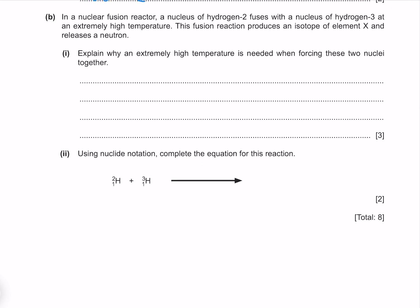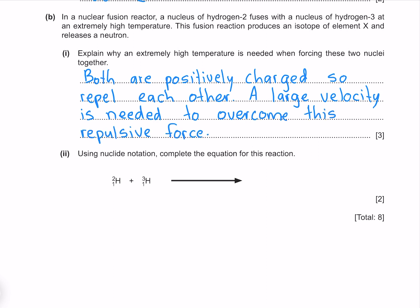In a nuclear fusion reactor a nucleus of hydrogen-2 fuses with a nucleus of hydrogen-3 at an extremely high temperature. This fusion reaction produces an isotope of element X and releases a neutron. Explain why an extremely high temperature is needed when forcing these two nuclei together. Both are positively charged so repel each other. A large velocity is needed to overcome this repulsive force.